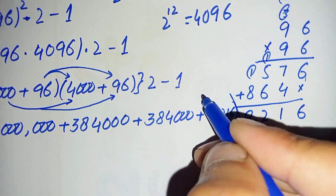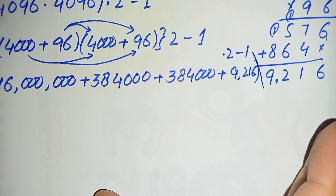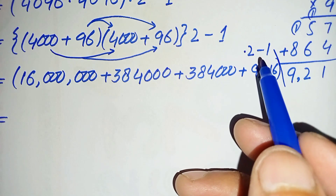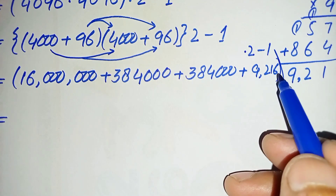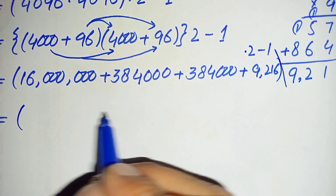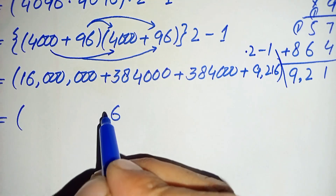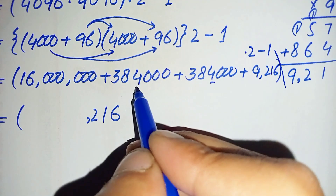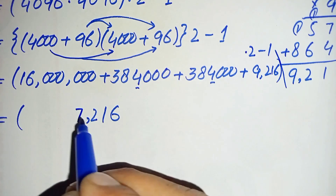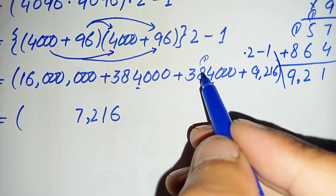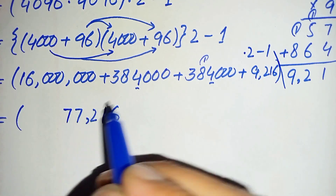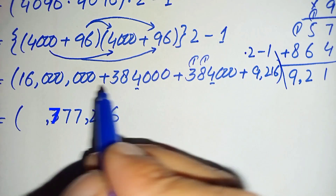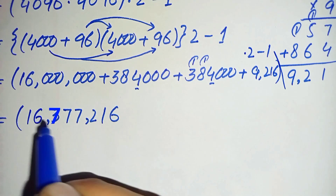Now we have 16,000,000 plus 384,000 plus 384,000 plus 9,216, times 2 minus 1. We add these four numbers together, starting from the ones position: 6 plus zeros is 6; then 1; then 2; then 9 plus 4 plus 4 is 17, write 7 carry 1; then 3 plus 1 is 4, plus 3 is 7. Adding the millions: 16. So the sum is 16,377,216.